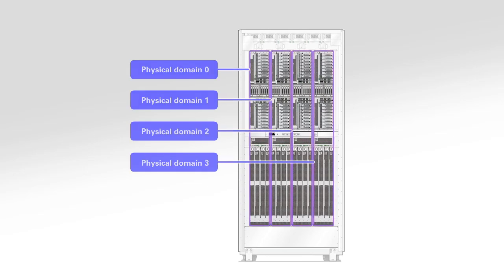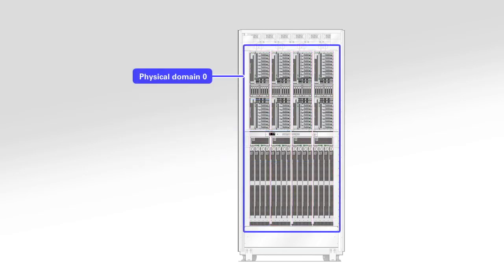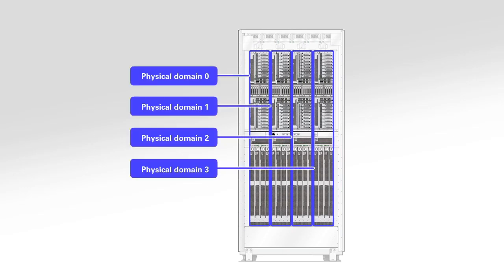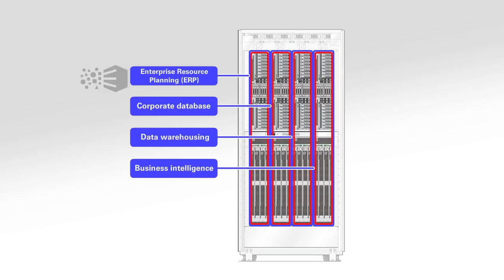For example, you can combine all of the DCUs into a single physical domain that contains all of the available hardware resources. Another configuration option is to divide the server into four physical domains, each containing one DCU and running its own operating system and applications for different organizations in your company.